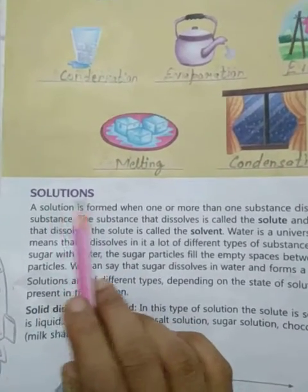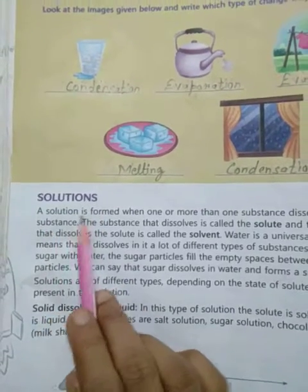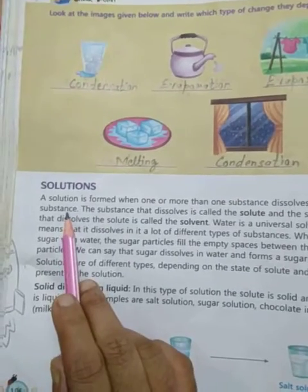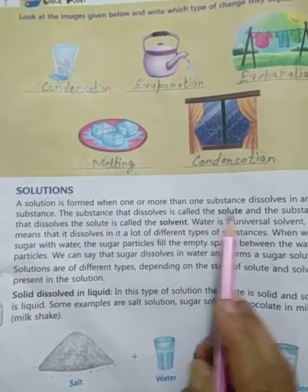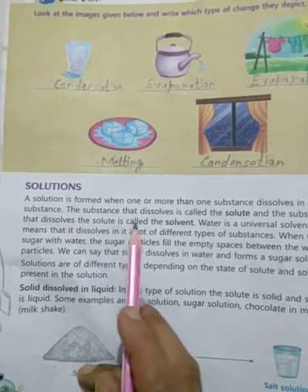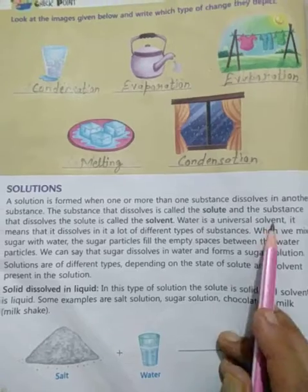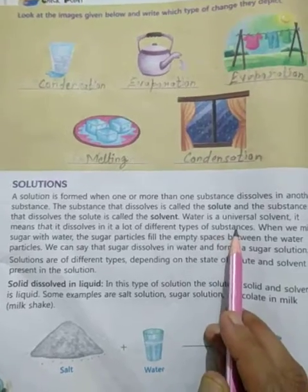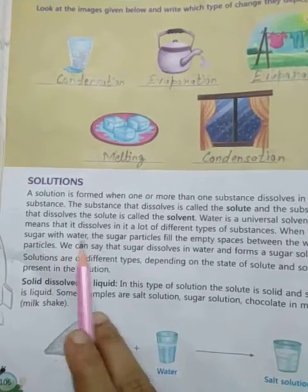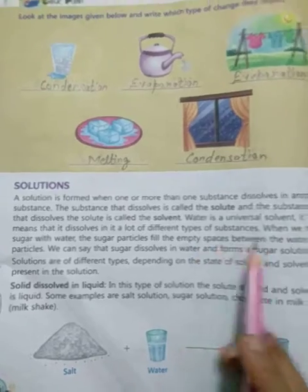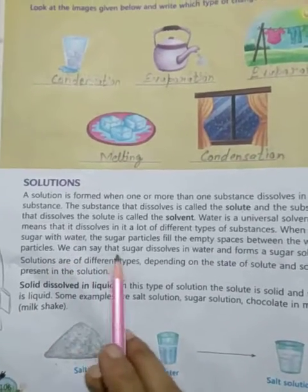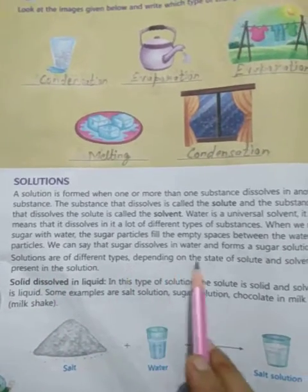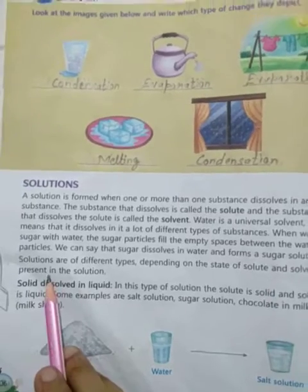We have to understand about solutions. A solution is formed when one or more substances dissolve in another substance. The substance that dissolves is called the solute, and the substance that dissolves the solute is called the solvent. Water is a universal solvent — it dissolves many different types of substances. When we mix sugar with water, the sugar particles fill the empty spaces between the water particles, forming a sugar solution. Solutions are of different types depending on the state of solute and solvent.